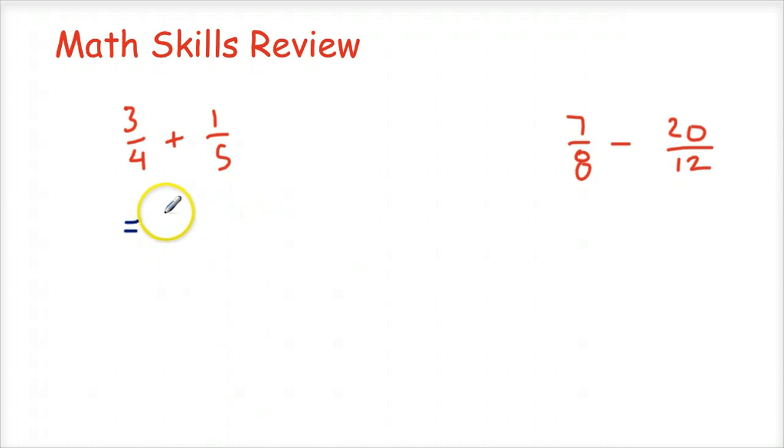So three fourths times five over five plus one fifth times four over four is going to be how I'm going to get the common denominator. Because remember, if I'm just going to multiply the denominator by five, I have to multiply the numerator by five as well. So five over five.